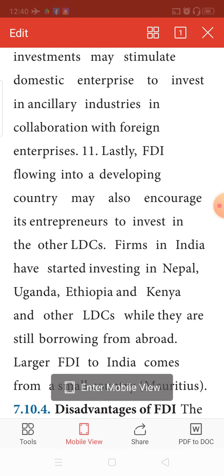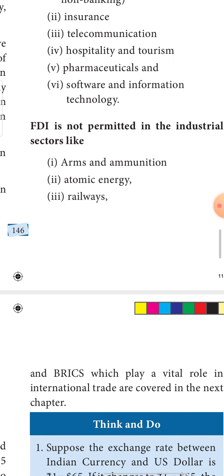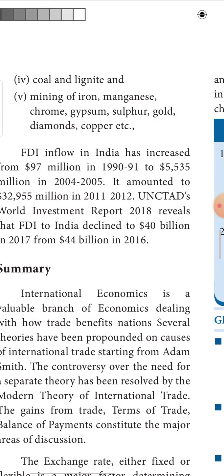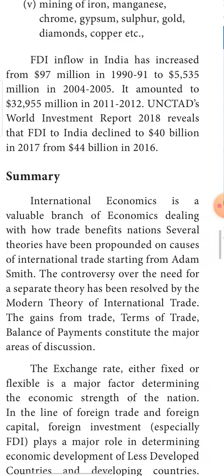FDI is not permitted in certain sectors: arms and ammunition production, which is related to national defense; atomic energy and nuclear energy production; the railway sector; coal and lignite, as these are natural resources — if we gave rights, foreign investors would seize our natural resource assets; and mining of iron, manganese, gypsum, and coal. Most extractive industries do not come under FDI.